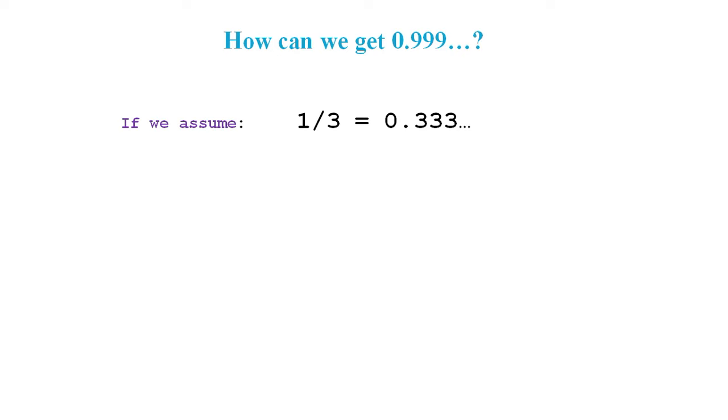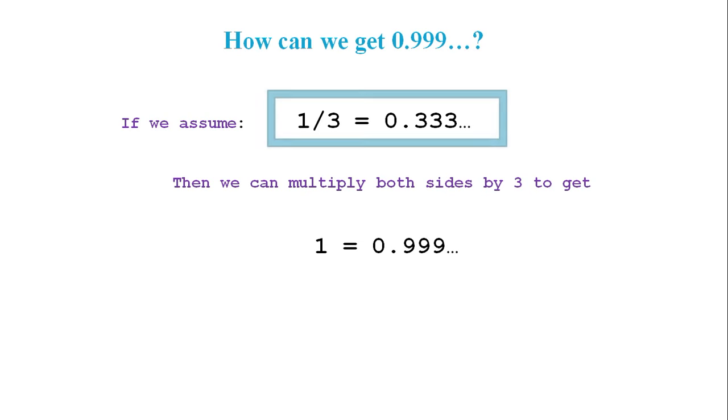Well, if we assume 1/3 equals 0.3 recurring, then we can multiply both sides by 3 to get 1 equals 0.9 recurring. But the validity of this argument depends on the validity of the starting assumption. Can we assume that 1/3 equals 0.3 recurring?